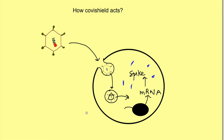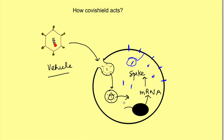Once these spike proteins are produced, some of them start appearing on the surface of the cell — the cell expresses them on its surface. It's like telling others that there is a foreign attack. The foreign antigen starts appearing on the surface of the cell. Remember that this adenovirus is not replicating or dividing in the cell; it is only the coronavirus spike protein that is being expressed. So the adenovirus is acting as a vehicle carrying the coronavirus genome, allowing the cell to produce spike proteins.